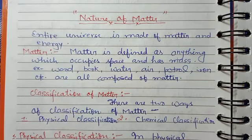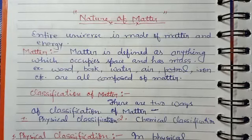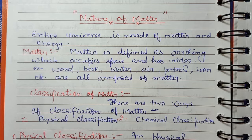Matter exists in three states: solid, liquid, and gas. Although matter exists in five states, we mainly discuss three. The fourth state is plasma and the fifth is Bose-Einstein condensate, but in our study we only talk about solid, liquid, and gas.